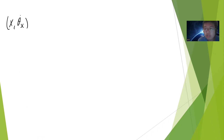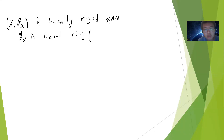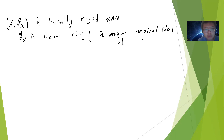When I say X, O is a local ring space, basically it's the ring space where O is a local ring. Local ring means that there is a unique maximal ideal at each stalk. So you can take O of small x, where capital X is the space and small x is a point.